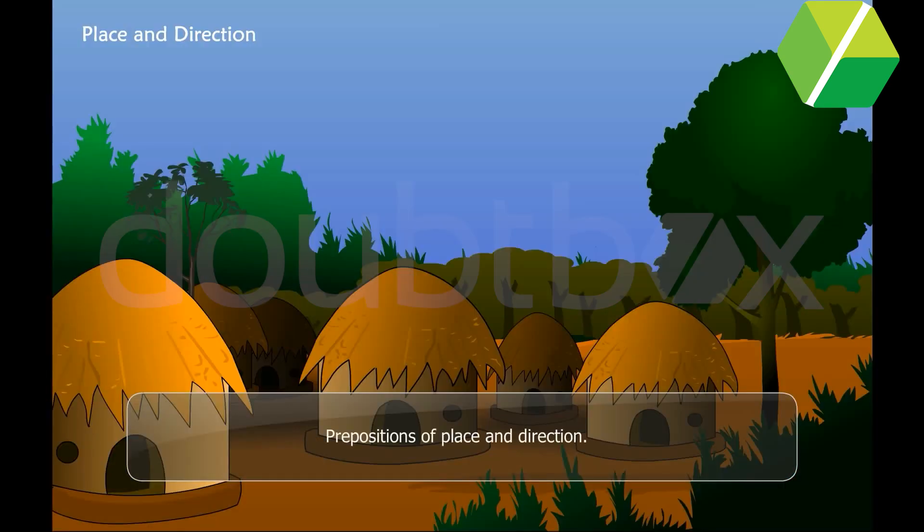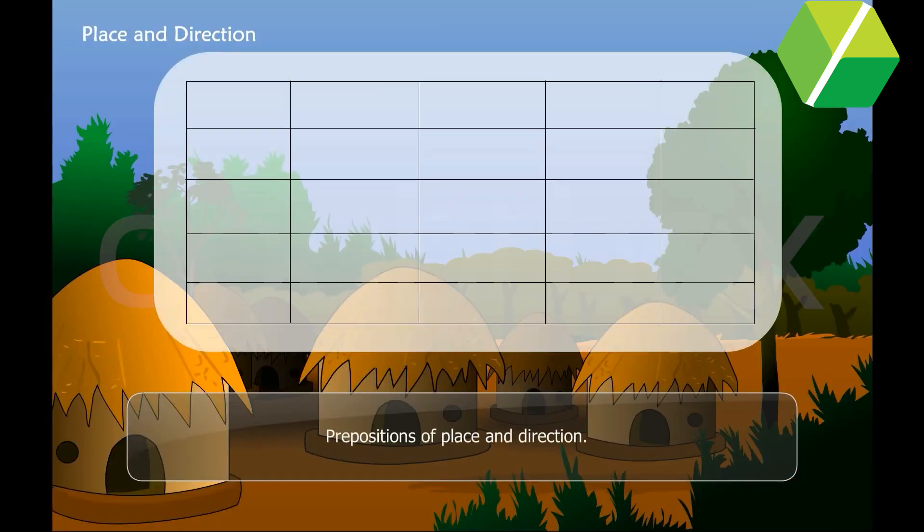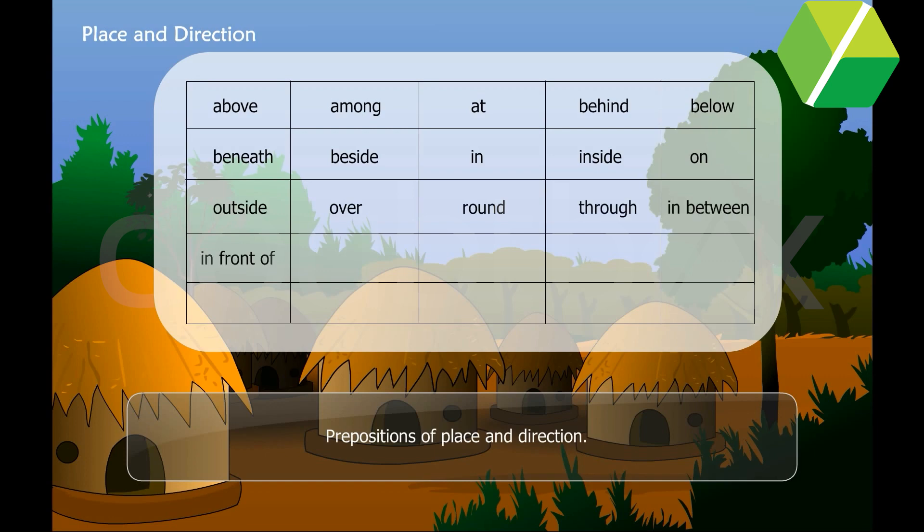Prepositions of place and direction: above, among, at, behind, below, beneath, beside, in, inside, on, outside, over, round, through, in between, in front of, next to, on top of,